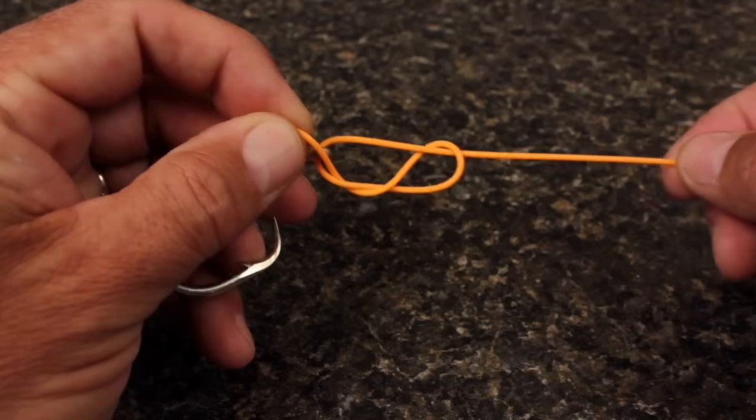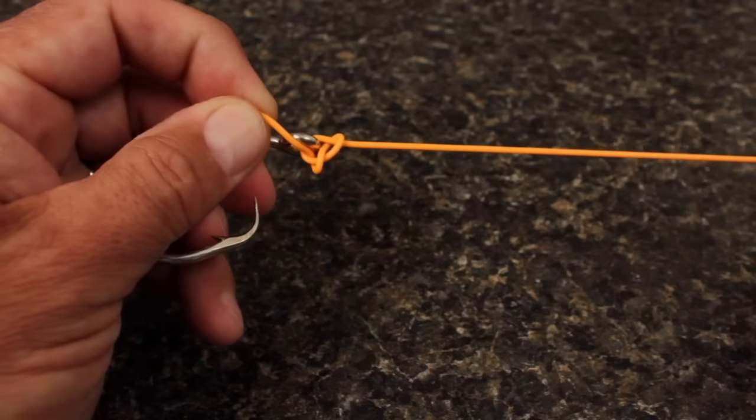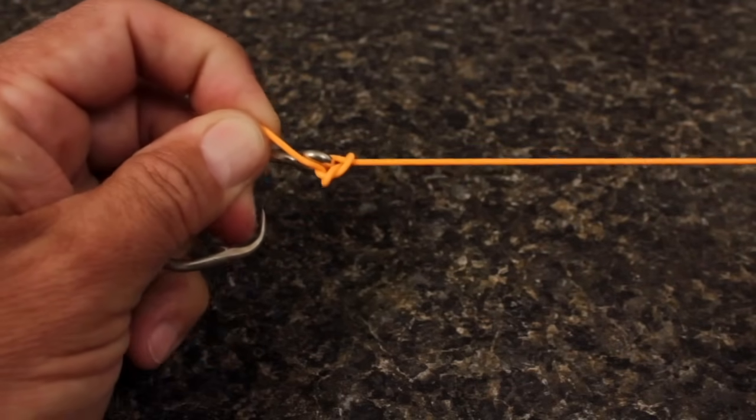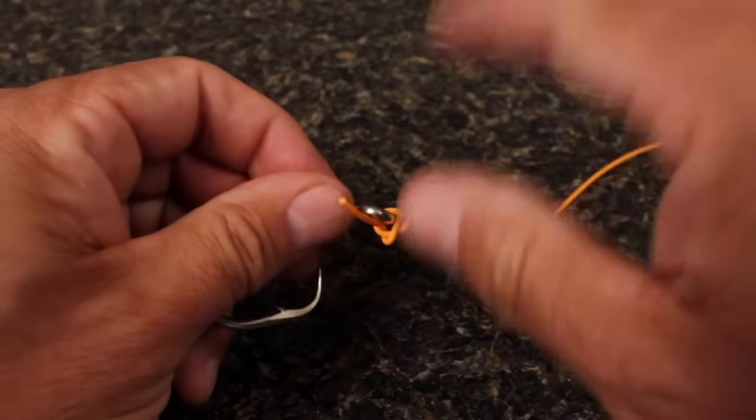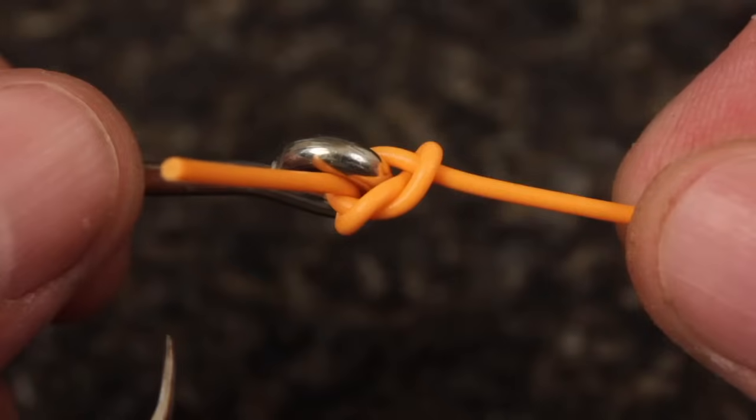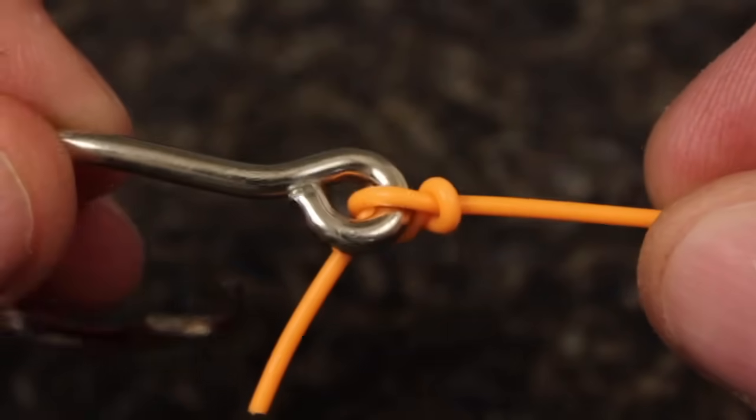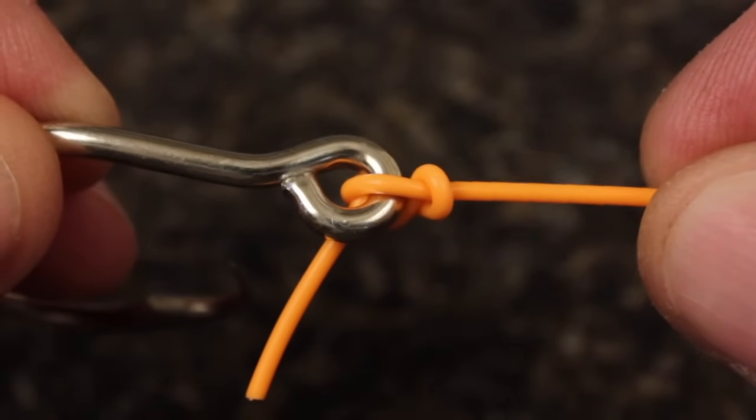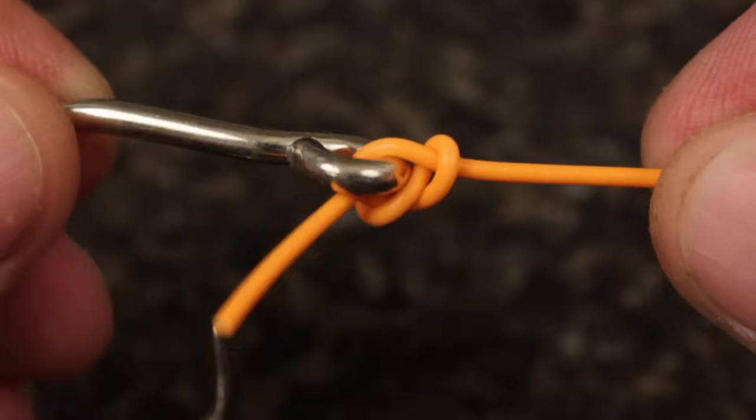Now begin to draw the knot tight by pulling on the running line, all the while holding on to the tag. Oftentimes, you'll end up with something that looks like this, which is okay, but a simple adjustment will keep the knot from slipping and make it a good bit stronger.